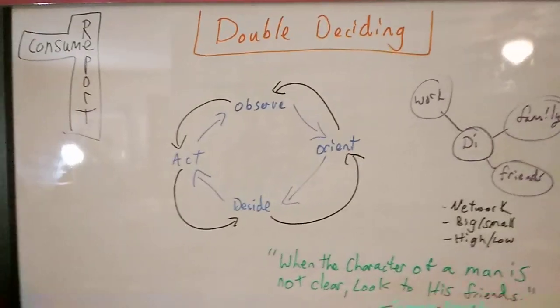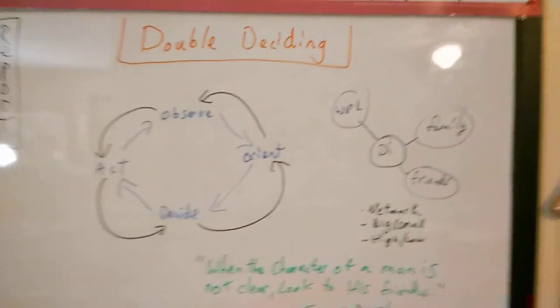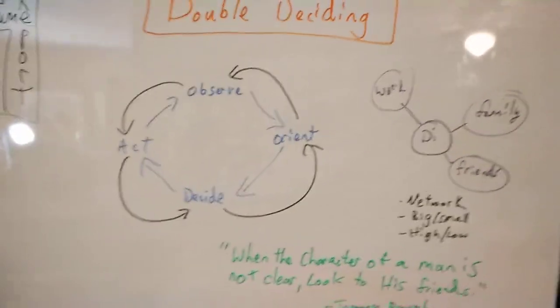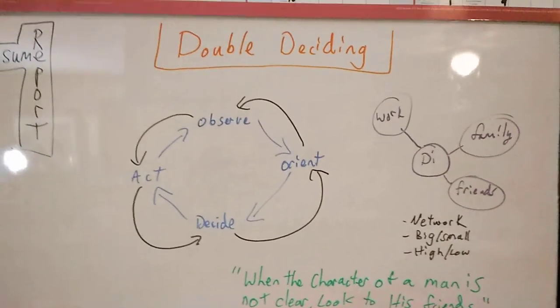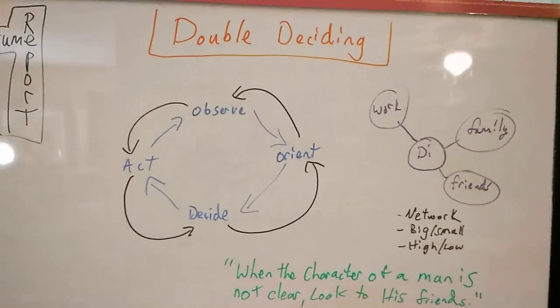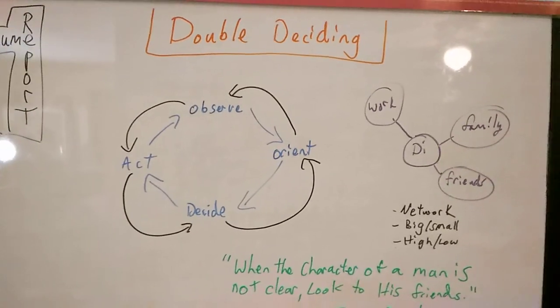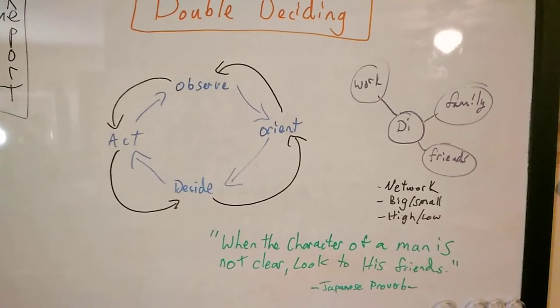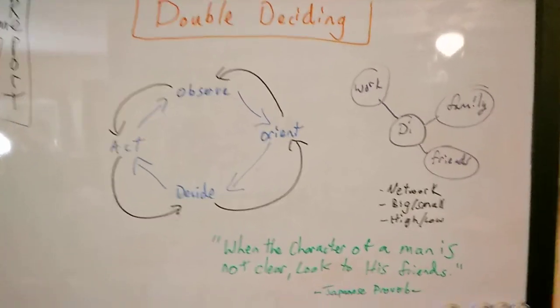All right, welcome to the Consumer Report, episode four, I believe. This is going to be about my insights regarding double deciding. It's been something I've been really working on since I got into OPS, the superpower of double deciding what they're doing, trying to wrap my brain around that. And so I've had a couple of insights about it.